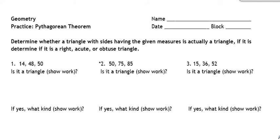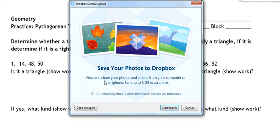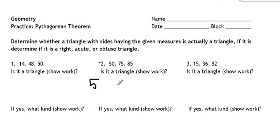Number two. Take the two smaller sides, so that would be 50 plus 75, and see if that's bigger than 85. And it is. We can tell that without even adding. So yes, this is a triangle.